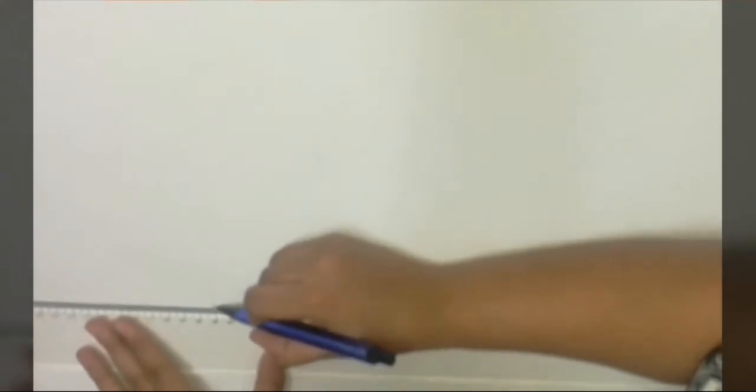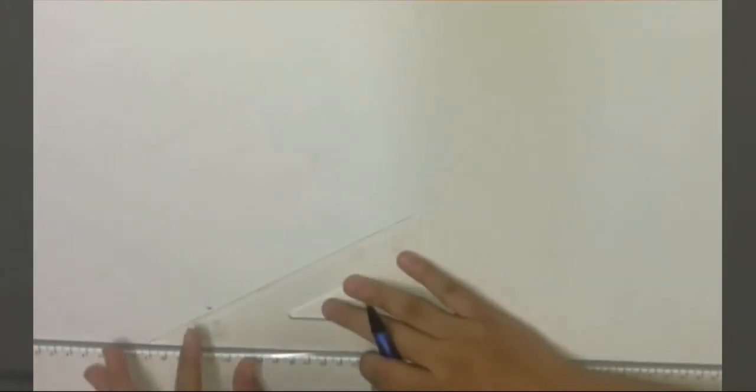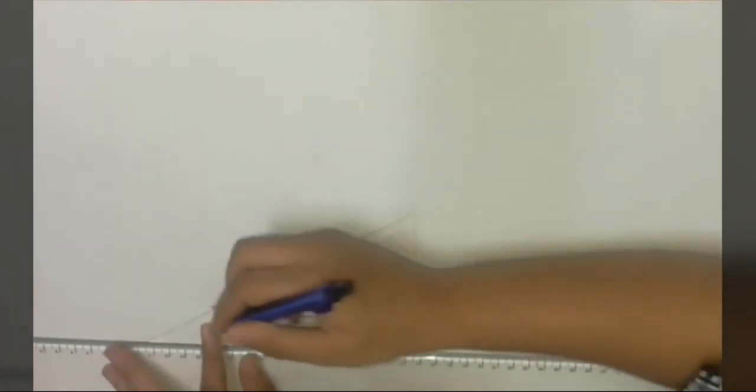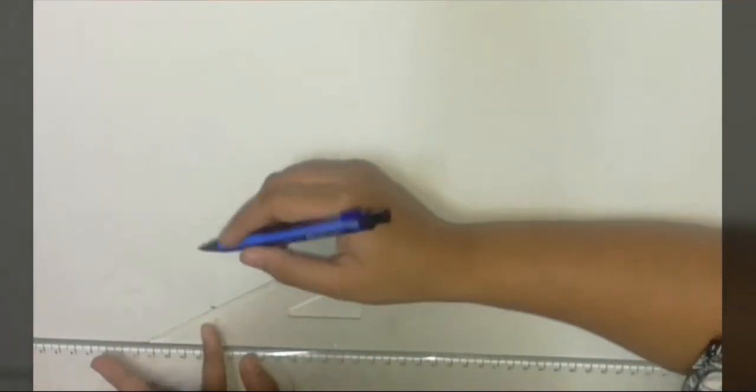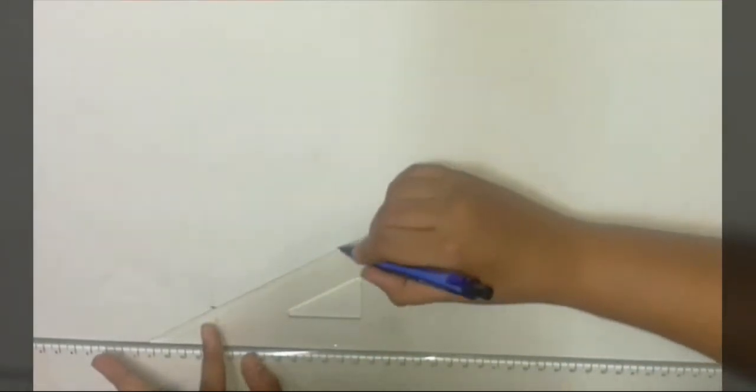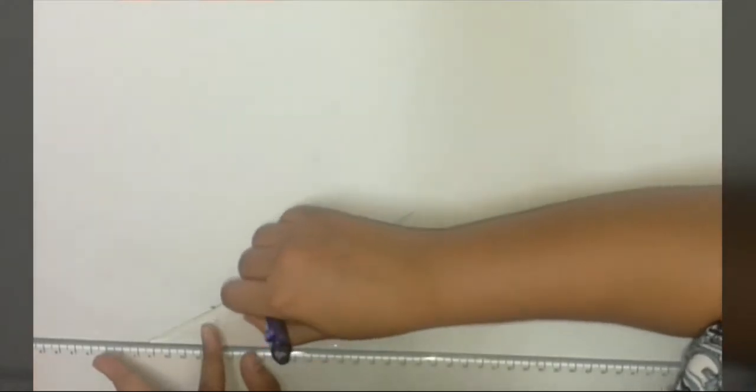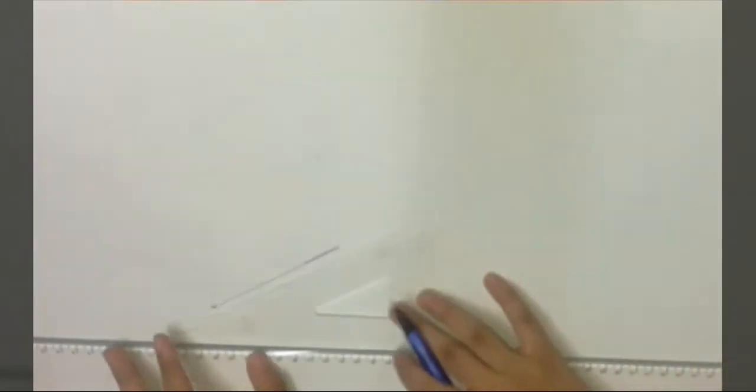We will make a straight line which will be dark. And then with the help of the 60 scale, we will make another line on the inclination of 30 degrees which will be light as they are construction lines.